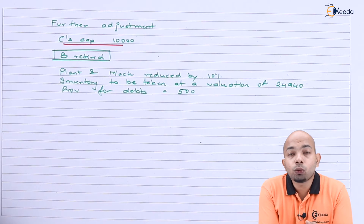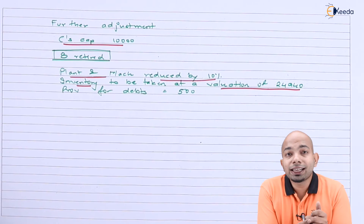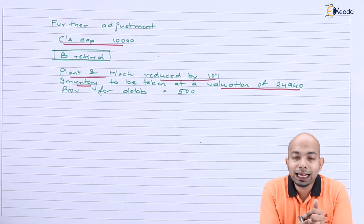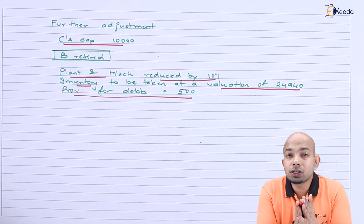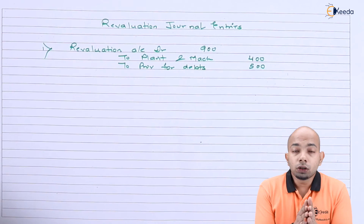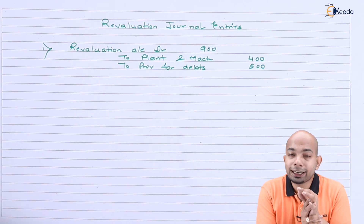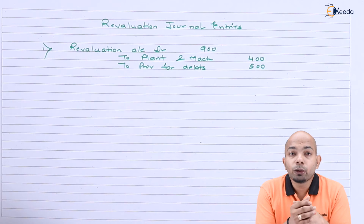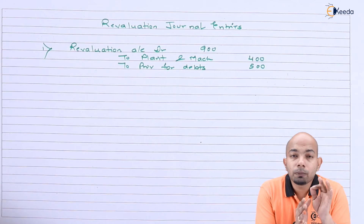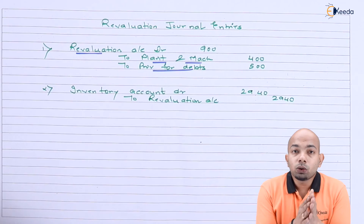On a certain date, B retired and the assets and liabilities were revalued as follows: plant and machinery was reduced by 10%, inventory was taken at a revised valuation of 24,940, and a provision for doubtful debts was created at 500. We need to pass the revaluation journal entries and prepare the revaluation account. The first adjustment — plant and machinery going down by 10% on 4,000 gives a reduction of 400. Asset value going down means revaluation account is debited and the asset is credited. The provision for doubtful debts, being an increasing liability, is also credited.